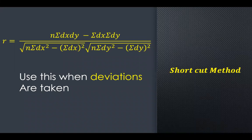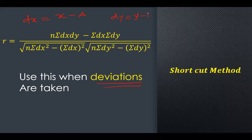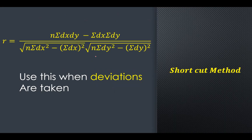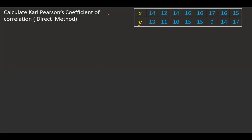Before that, let's see what formula we are going to use. In the shortcut method, we are using deviations. The deviation dx is the deviation for x, calculated as x minus a. Similarly, dy is calculated as y minus b, where a and b are some assumed numbers — similar to the assumed mean method. This is the shortcut method to find Pearson's coefficient of correlation; we have already done the direct method two ways.